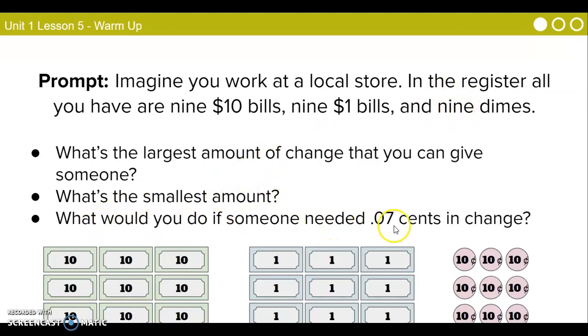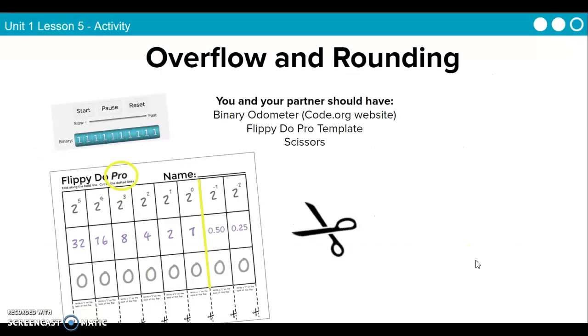What would you do if someone needed $0.07 in change? Well, that's where the round off error comes from. So we wouldn't be able to give $0.07 change. We don't have any pennies, so we'd only be able to give them a dime, which isn't exactly their change. All right, so basically here's what we're going to do.